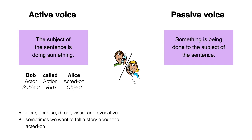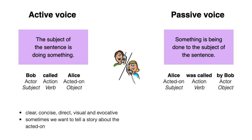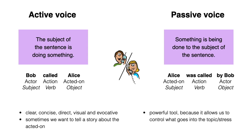But sometimes we don't want to tell the story about the actor — we want to tell the story about the acted on. In this case we would use the passive voice and write: "Alice was called by Bob." Here, Alice is the subject, and because Alice is being acted on, we call this the passive voice. Being able to choose between active and passive voice is a powerful tool, but the passive voice carries a price because it weakens the story.